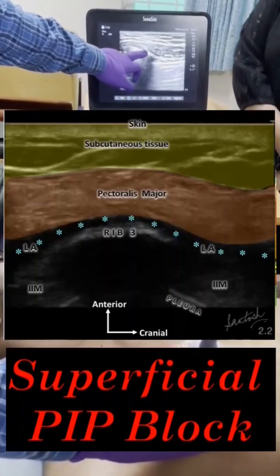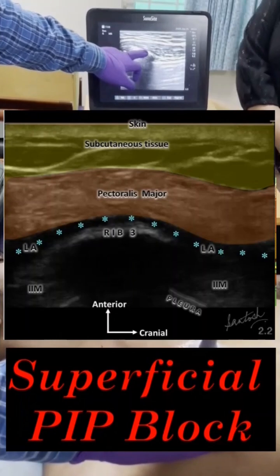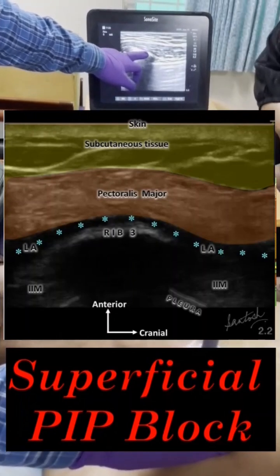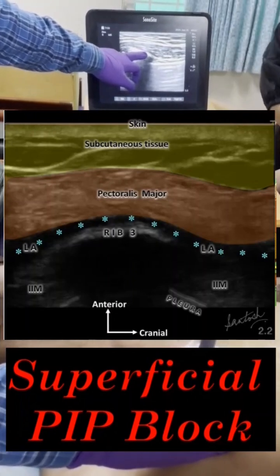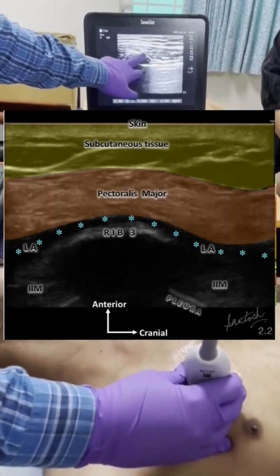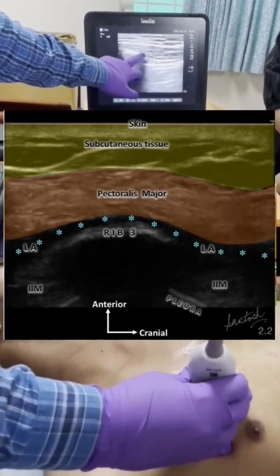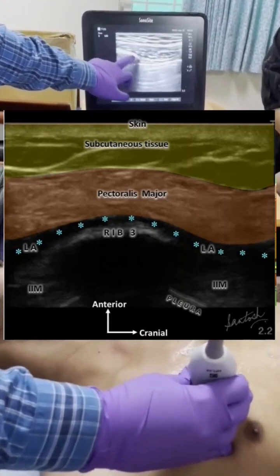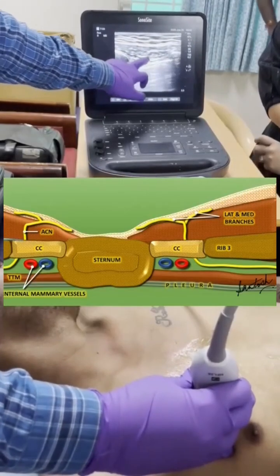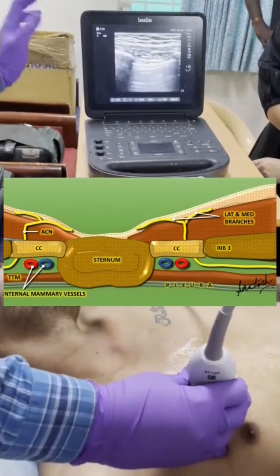That will be your superficial PIP — or superficial parasternal intercostal plane, or pecto-intercostal plane. This is the intercostal muscle here. Either you can come here, hit the rib and deposit the drug, or you can come in this plane and deposit the drug.